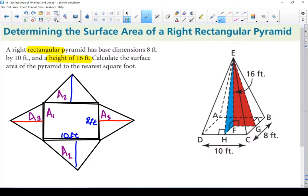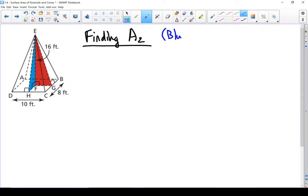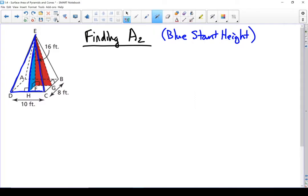Let's start finding those slant heights. I'm going to find the blue slant height first. So we are looking for the area of this triangle right here. And in order to do that, we need to find this slant height right there. To do that, I'm going to start by drawing that blue triangle. And we're going to use the Pythagorean theorem to find that slant height.